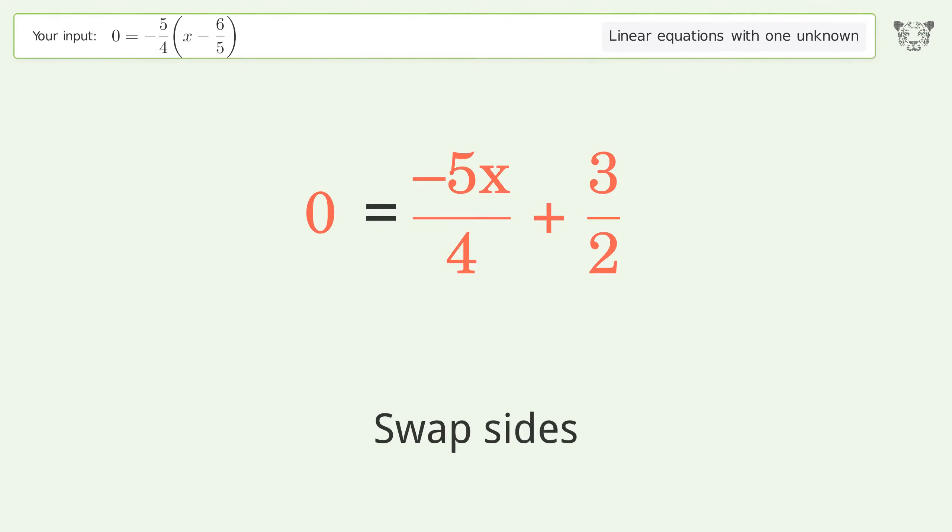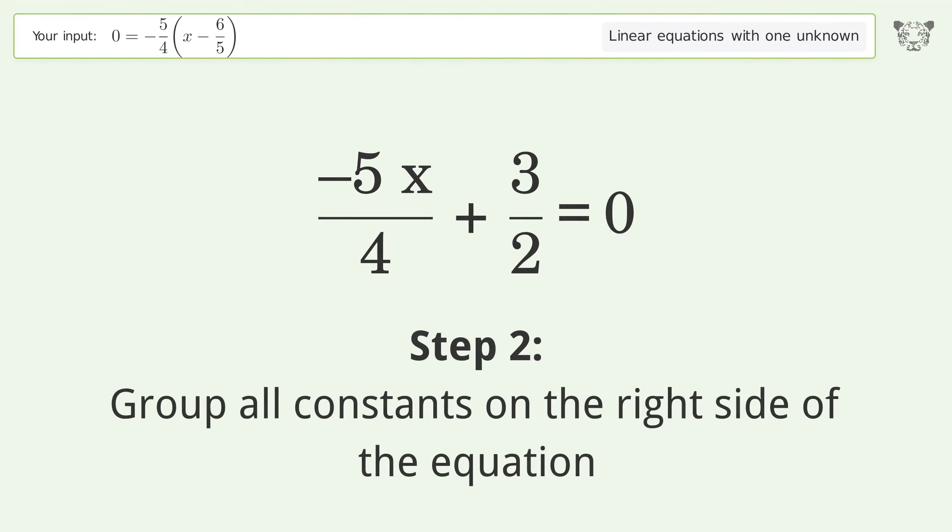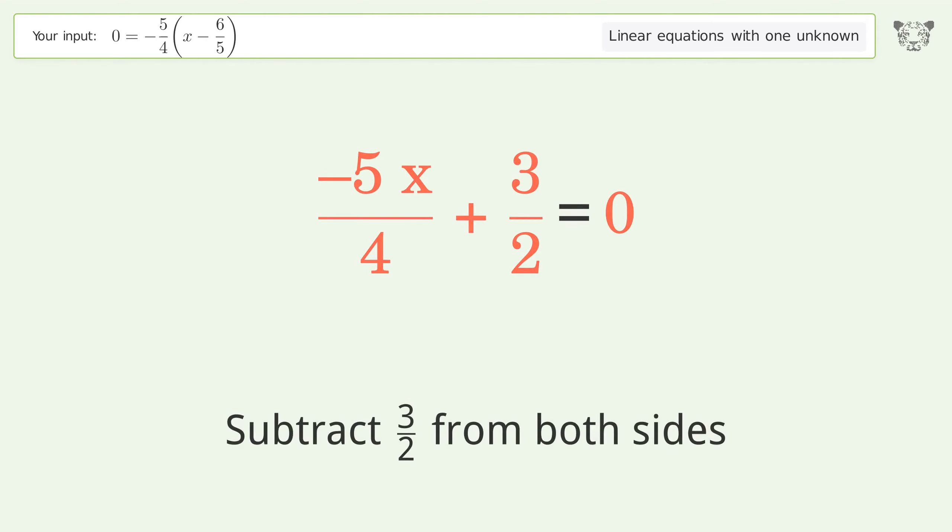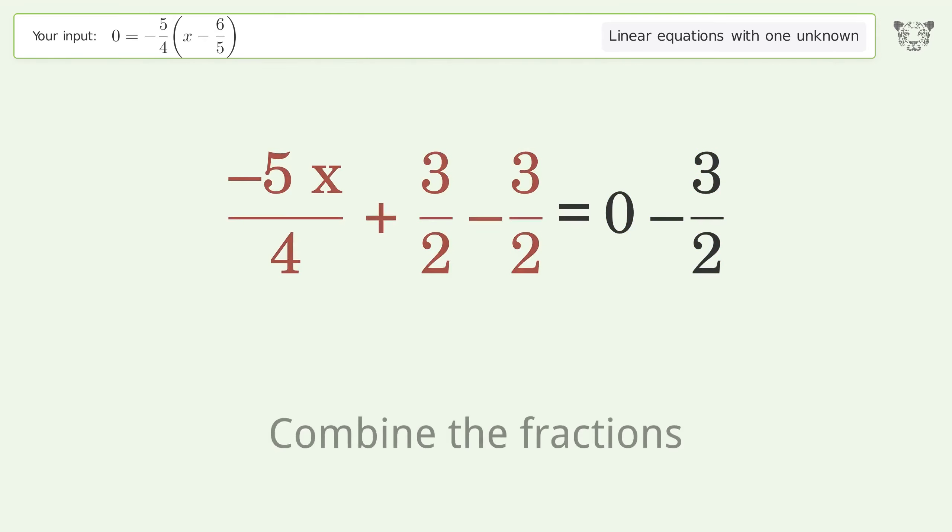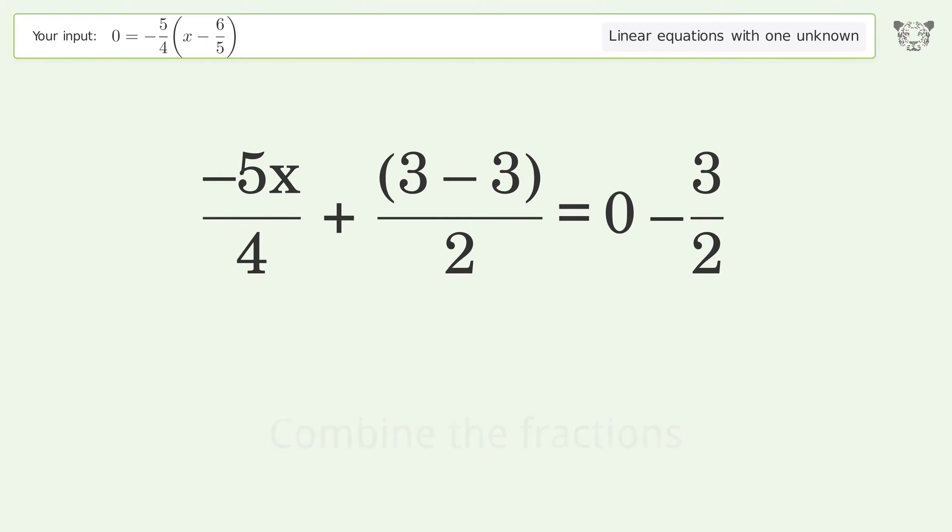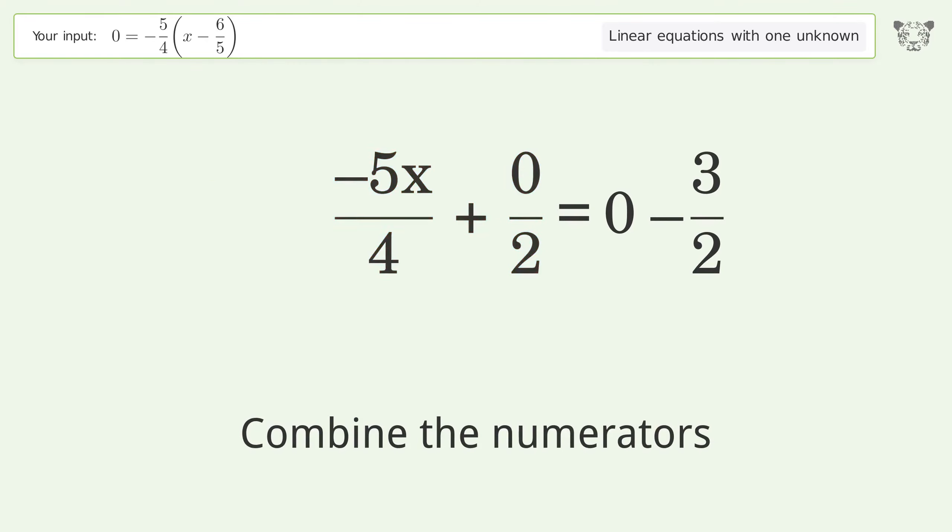Swap sides. Group all constants on the right side of the equation. Subtract 3 over 2 from both sides. Combine the fractions. Combine the numerators. Reduce the zero numerator. Simplify the arithmetic.